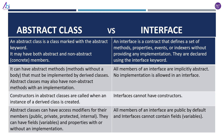When it comes to abstract classes, they can have abstract methods — methods without a body that must be implemented by derived classes. Abstract classes may also have non-abstract methods with an implementation. In the case of interfaces, all members are implicitly abstract and no implementation is allowed.